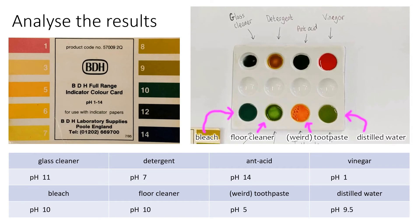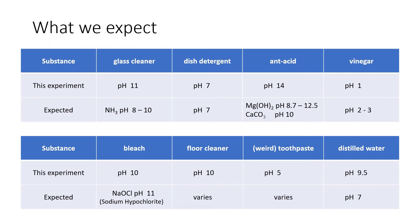So, the results are a little bit strange. Let's compare the results to our values that we would expect to see. For the glass cleaner we would expect ammonia, which is a very common substance used in glass cleaner, to be somewhere in the range of pH 8 to 10. So this result was okay, possibly slightly on the not that okay side of things. The dish detergent was exactly like we expected, so that's a great result.